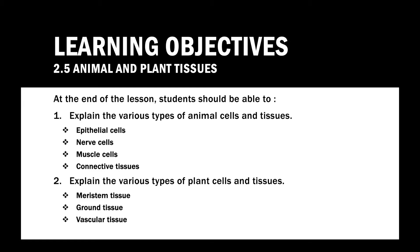These are the learning objectives you need to complete by the end of the lesson. Students should be able to explain the various types of animal cells and tissues — including epithelial cells, nerve cells, muscle cells, and connective tissues — and also explain the various types of plant cells and tissues, including meristem tissue, ground tissue, and vascular tissue.